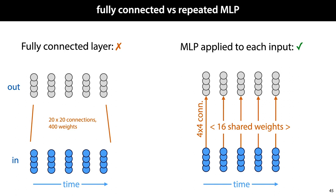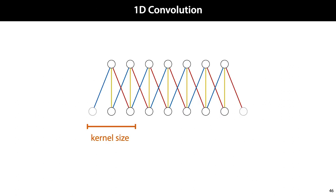Luckily, there is a layer that we've seen already that is a sequence-to-sequence layer, and allows for information to be propagated along the time dimension. This is the 1D convolution that we saw in the first deep learning lecture.